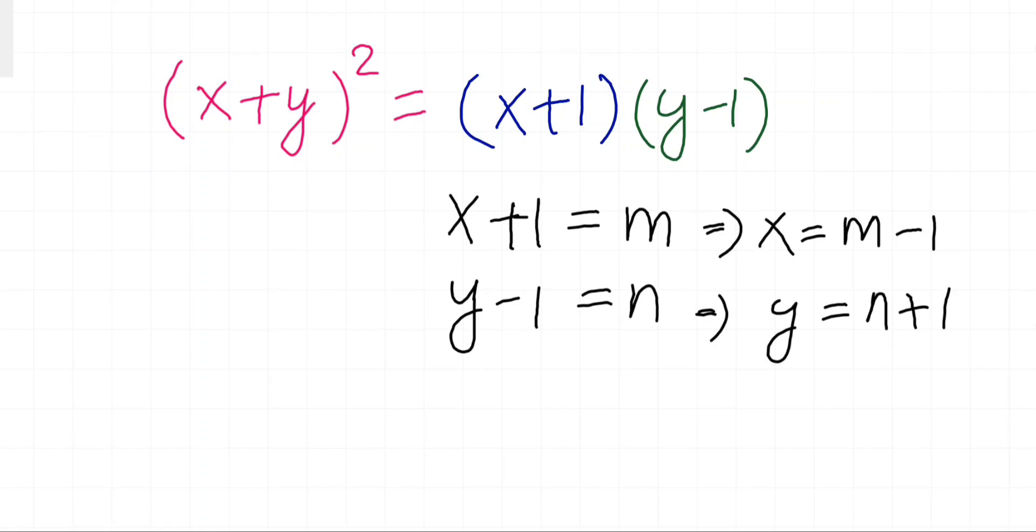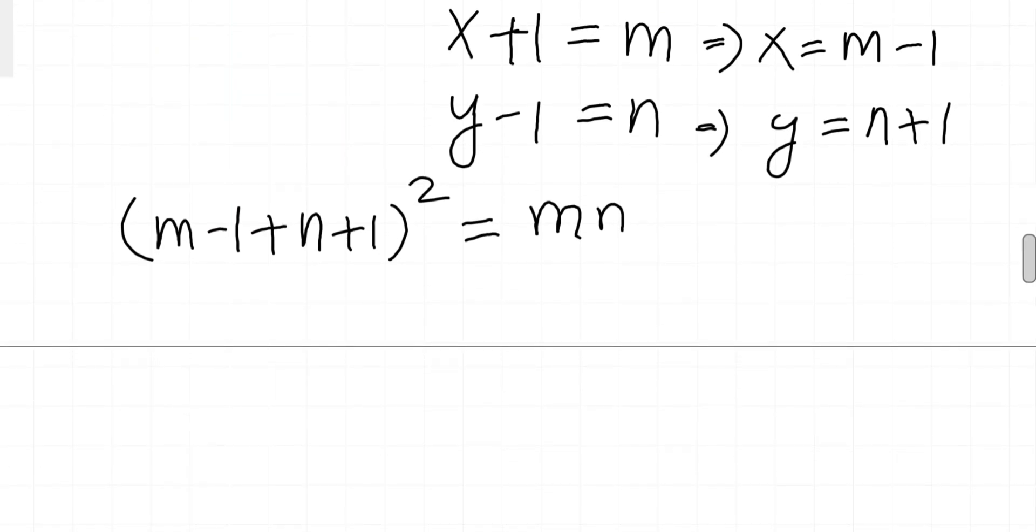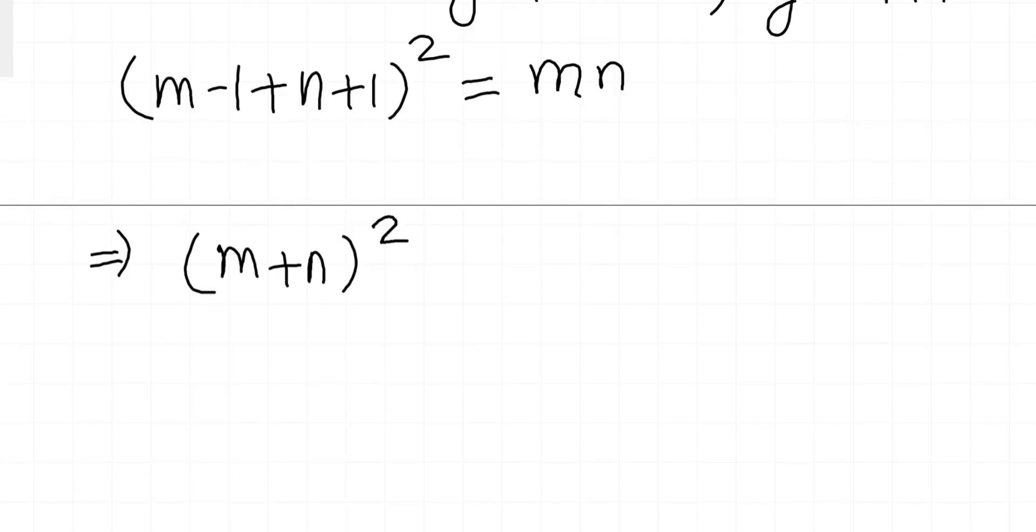Now x plus y is m minus 1 plus n plus 1, squared equals mn. As you can see, terms will cancel and we have m plus n whole square equals mn.